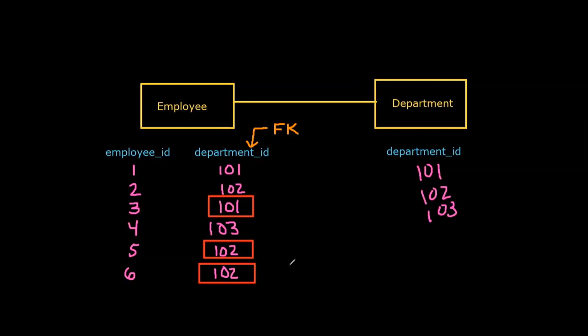Through this illustration, the use of null status allows us to enforce minimum cardinalities. If null values are allowed, the minimum cardinality is zero. If null values are not allowed, the minimum cardinality is one. Similarly, the unique status of the foreign key enforces the maximum cardinality: if the foreign key is unique, the maximum cardinality is one; if it is not unique, the maximum cardinality is many. This is how we enforce these cardinalities in our physical database designs.